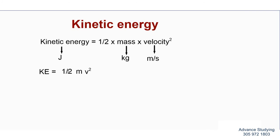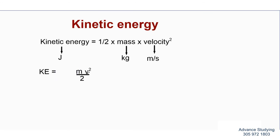This 'half' could be a little confusing, so let's change that. Instead of half, let's call that 'over 2.' Let's get rid of that half, which could be confusing — now it's easier to work with. Kinetic energy equals mass times velocity squared divided by 2.